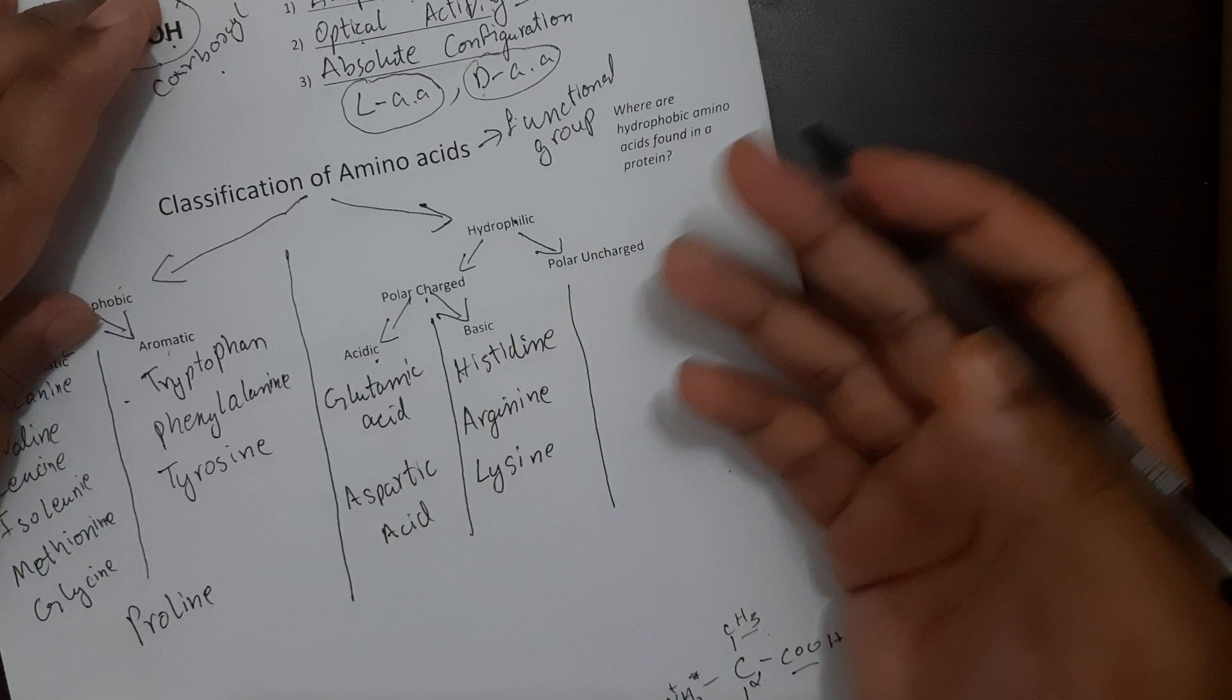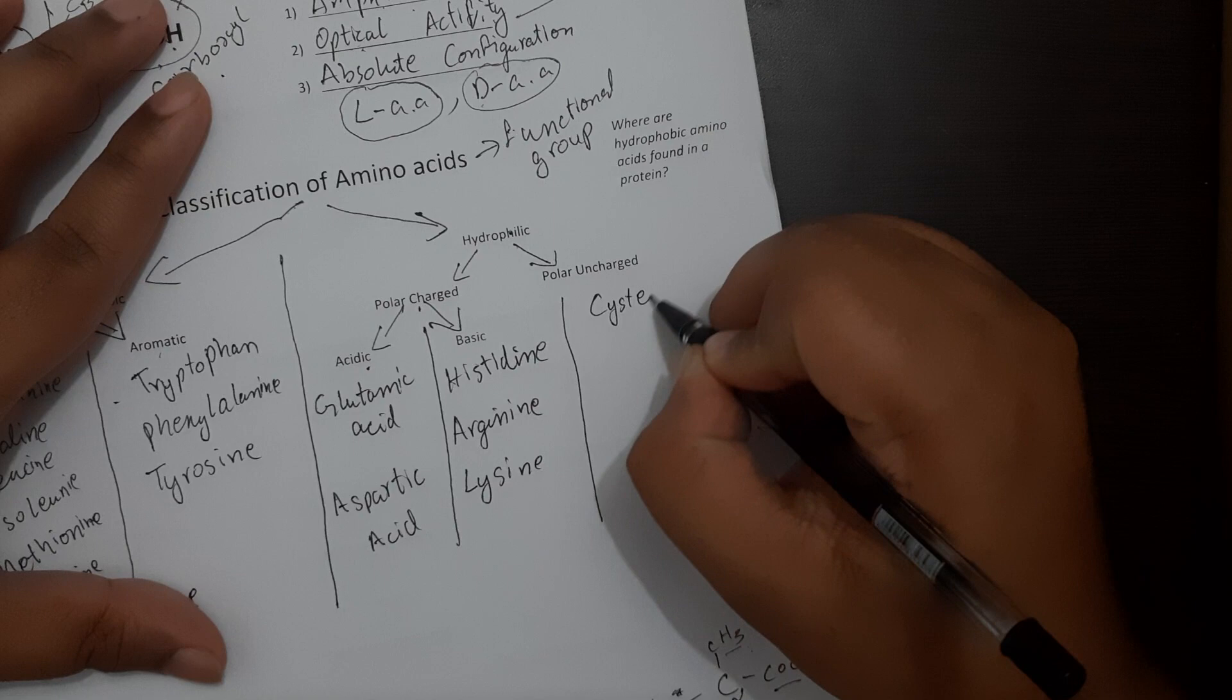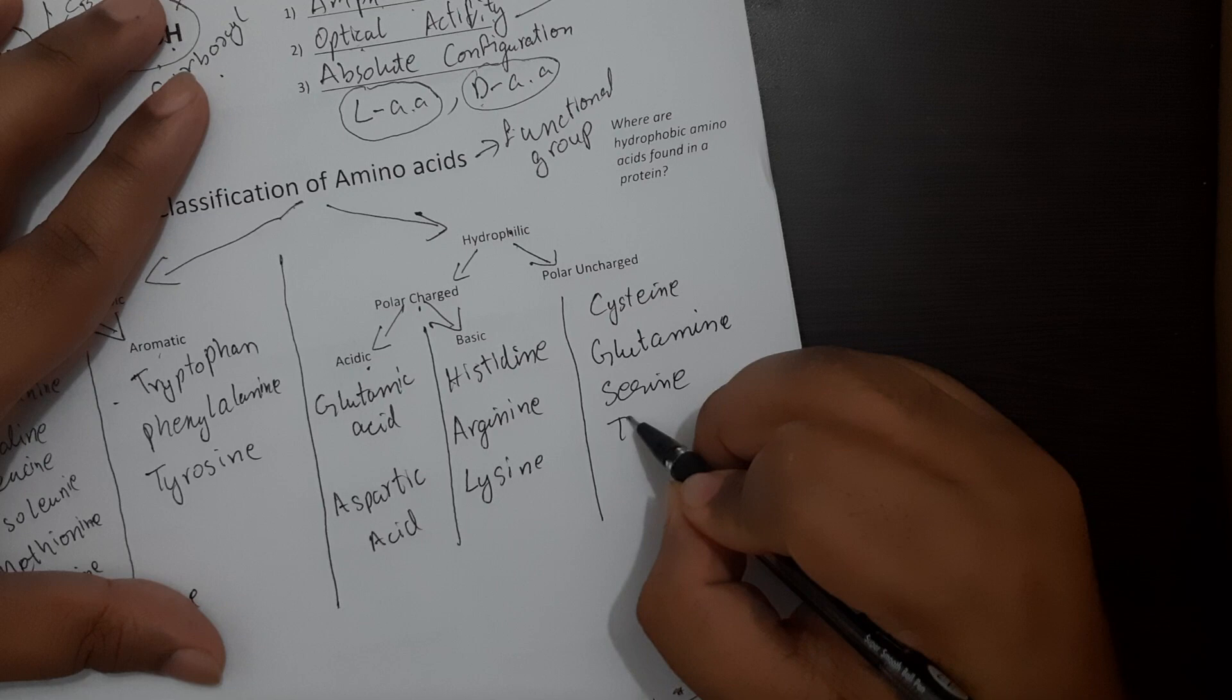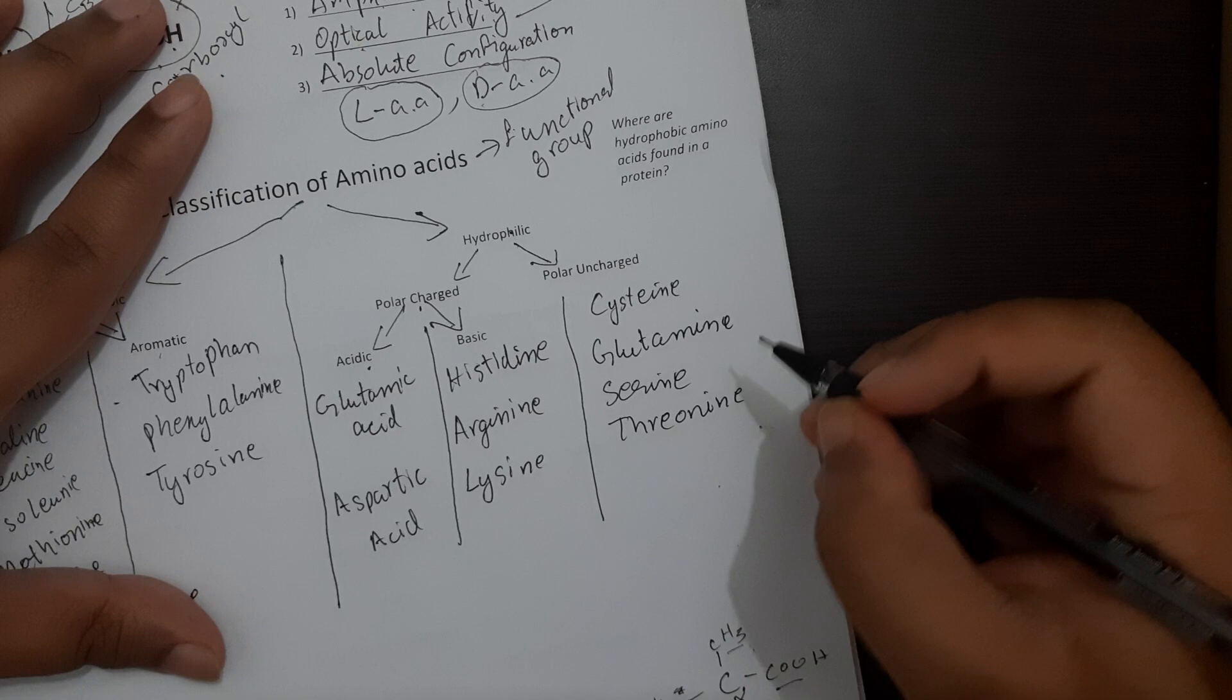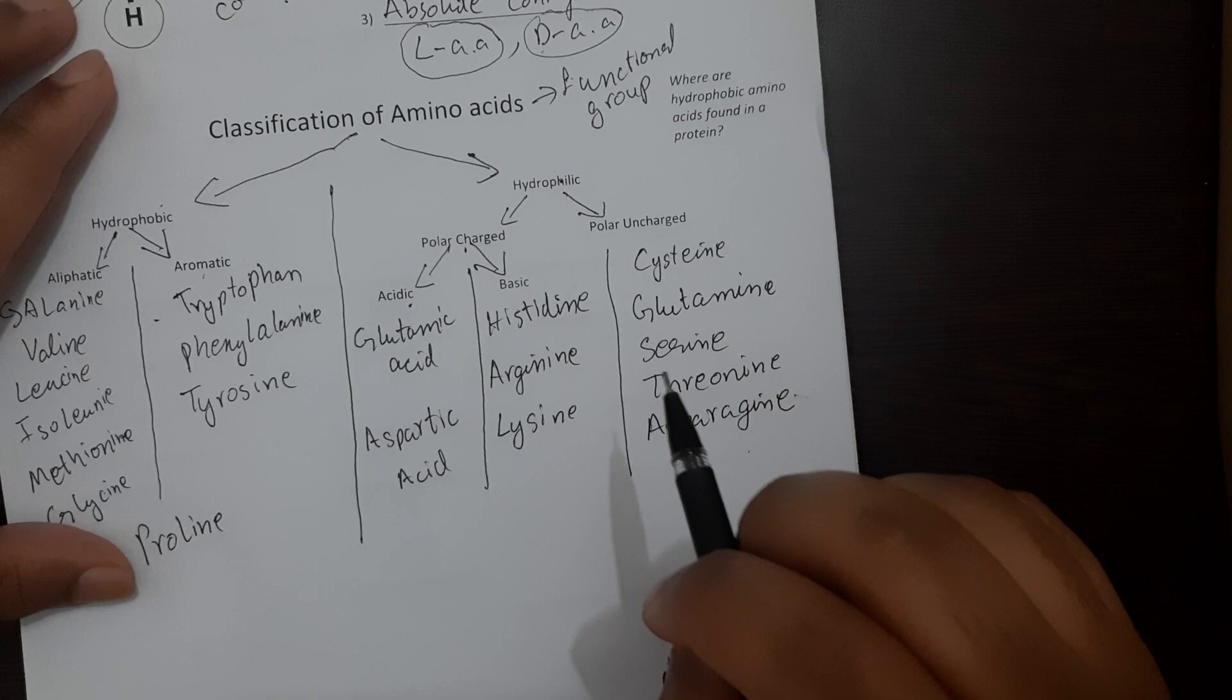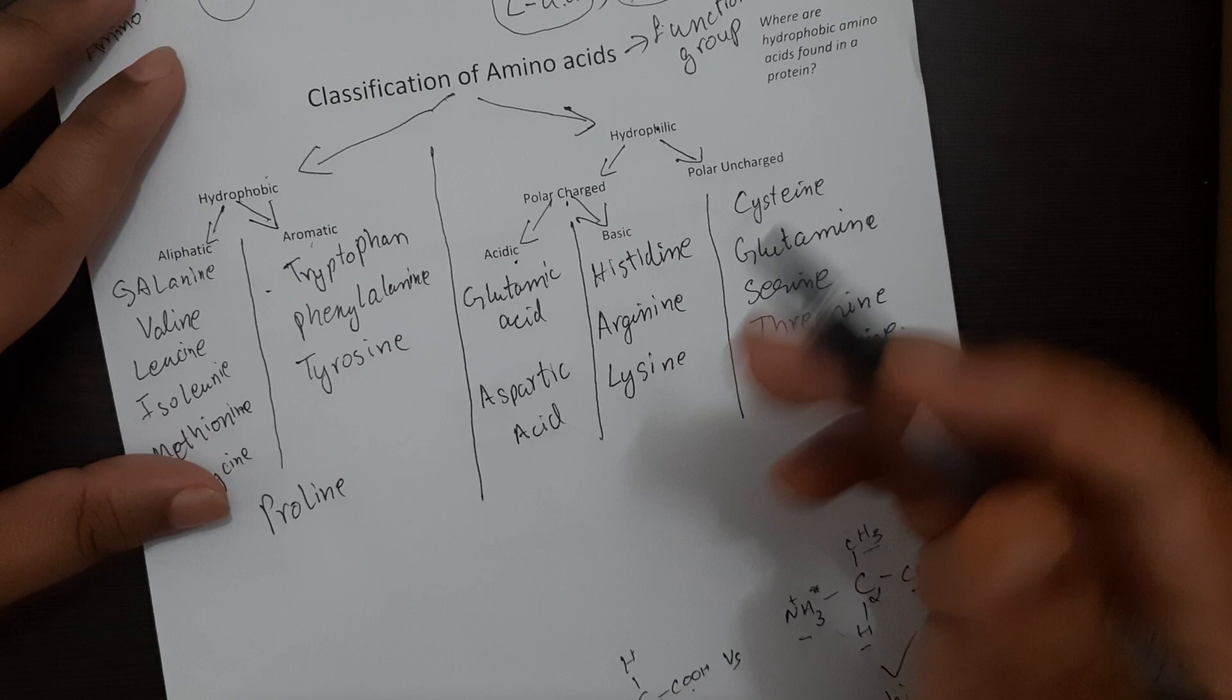And then your polar uncharged amino acids, which is just the remaining amino acids, will include cysteine, glutamine, serine, threonine and asparagine. So these are your broadly classified amino acids.